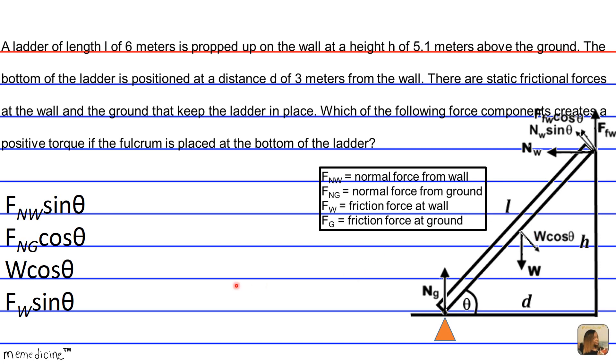The correct answer choice is going to be answer choice A, F sub NW, the normal force, the sine of theta component, shown here. And it was one of these two, but F sub FW cosine of theta isn't listed as one of the possibilities. So we had to go with the normal force of the wall.